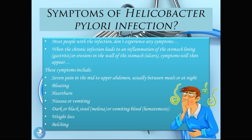Symptoms of Helicobacter pylori infection: most people with the infection don't experience any symptoms. When the chronic infection leads to inflammation of the stomach lining — known as gastritis — or erosions in the wall of the stomach — ulcers — symptoms will then appear. These include severe pain in the mid to upper abdomen usually between meals or at night, bloating, heartburn, nausea or vomiting, dark or black stool called melena, or vomiting of blood called hematemesis, weight loss, and belching.